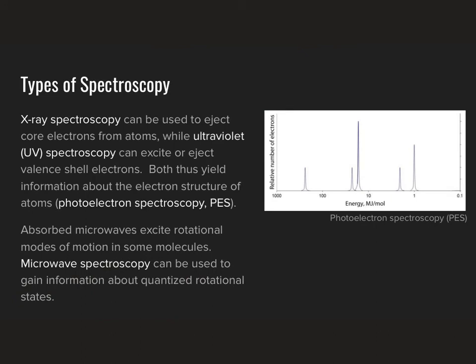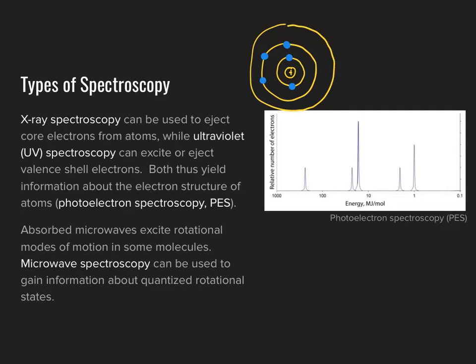The next type is the one you're most likely to come across on the AP test. This is what we refer to as either x-ray spectroscopy or UV spectroscopy. Collectively, both of these types of spectroscopy are used to probe for information about the energy levels of electrons in atoms via a process we call photoelectron spectroscopy, or PES. We're going to be investigating how to read one of these photoelectron spectroscopy graphs, because that's the most common type of question on the AP test. Generally, x-ray spectroscopy — being higher energy — is used to eject core electrons from atoms, whereas the lower-energy ultraviolet spectroscopy is used to excite or eject valence shell electrons.